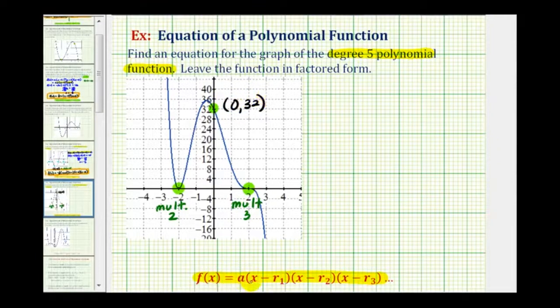So what we'll do is first find the factors of our quadratic function, and then we'll use this point here to determine the value of a. So we'll have f of x equals a times, the first zero is x equals negative two, so one factor must be x minus negative two, which would be x plus two.